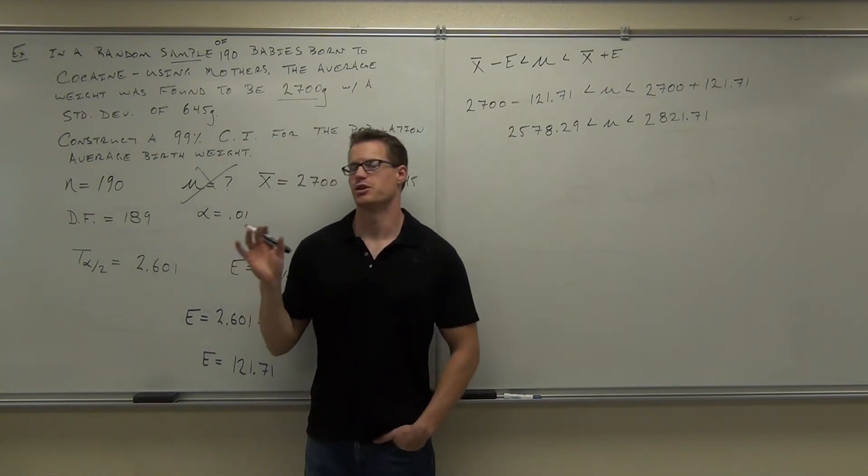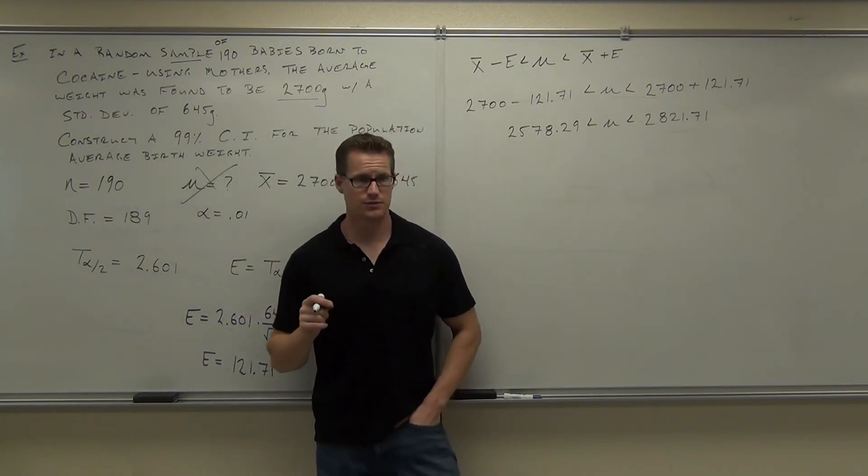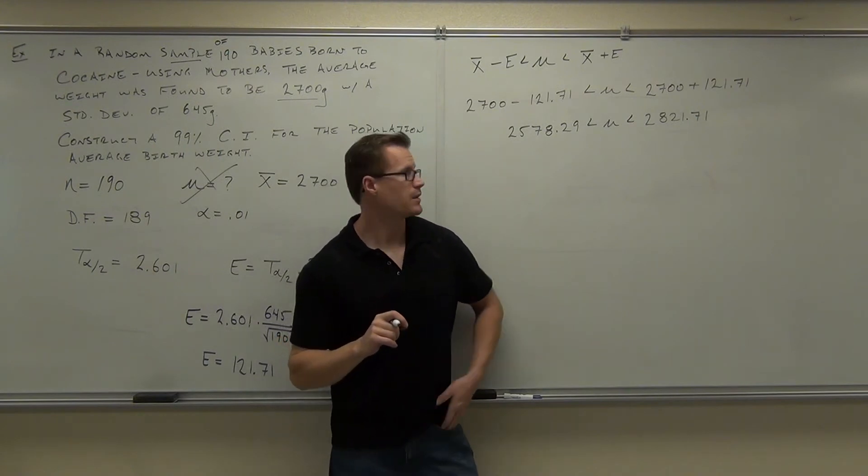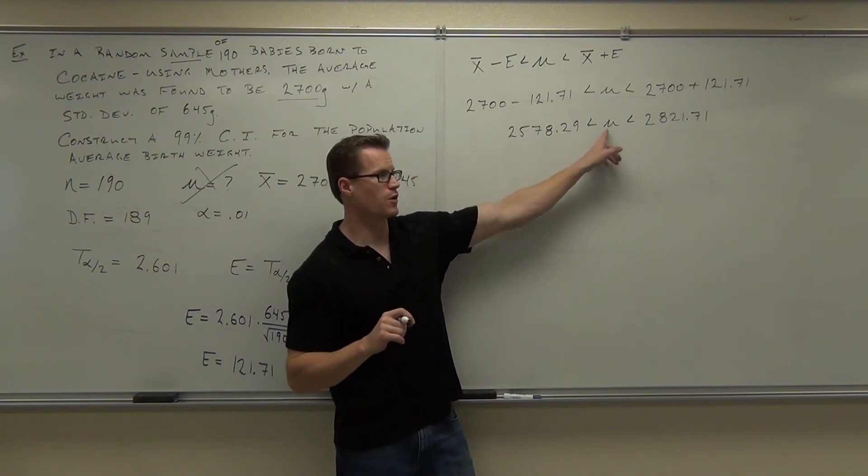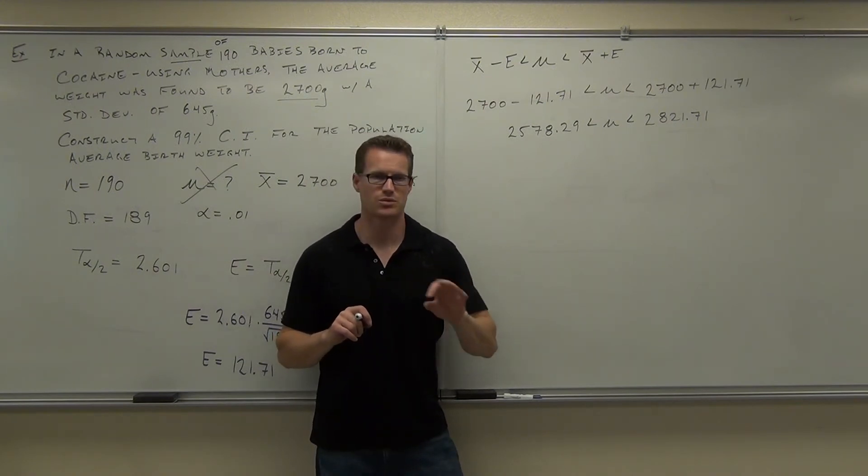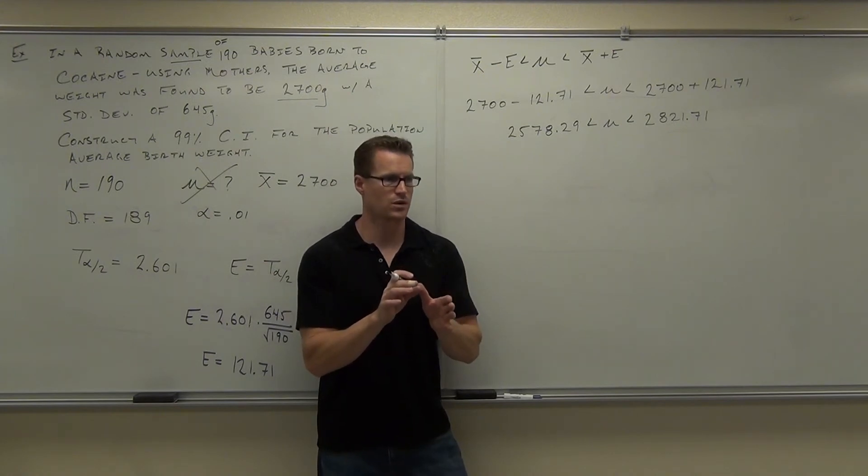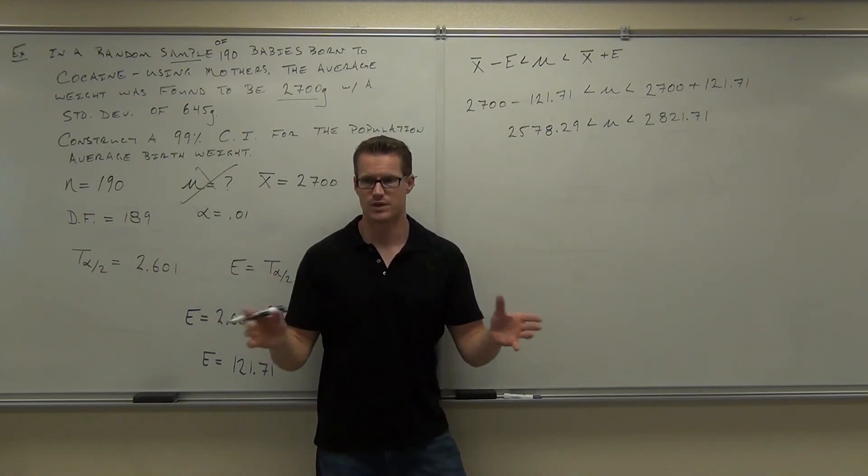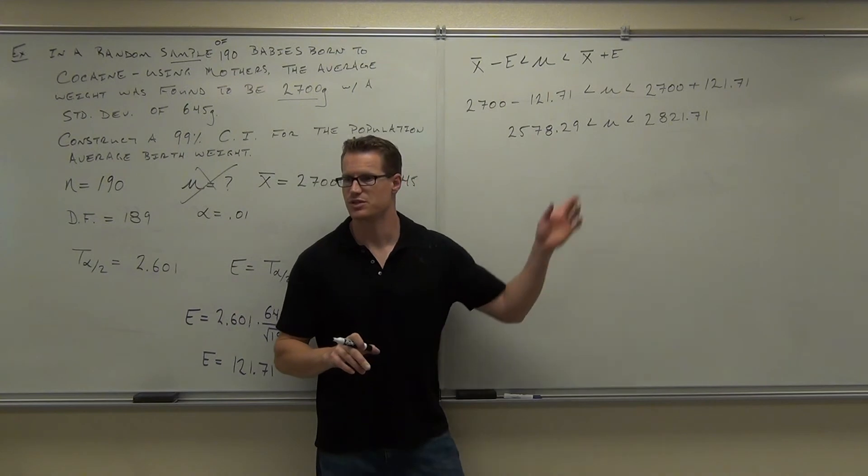So given this information, you're not positive that the actual population mean is going to fall within this range, but you're 99% sure it is. That's enough to make a good decision, right? That's enough to say I'm going to produce this one item that I'm 99% sure it's going to work for these babies. Because you're pretty sure the average is this one.